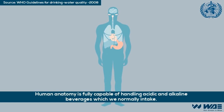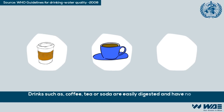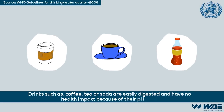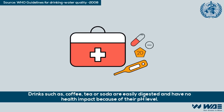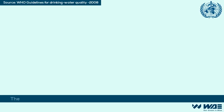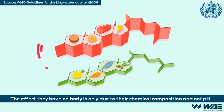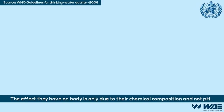Drinks such as coffee, tea, or soda are easily digested and have no health impact because of their pH level. The effect they have on the body is only due to their chemical composition and not pH.